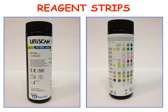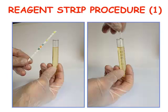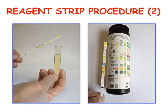What about the reagent strip? The reagent strip is based on plastic sticks which bear several pads, each pad being impregnated with chemical reagents. Each specific chemical reagent develops a chemical reaction which is meant to detect a specific urine feature. The results are obtained by matching the color developed in the pad with the color scale reported on the box. You plunge the dipstick into the urine, take it out, wait for some seconds, and then compare the color you have on the stick with the color you have on the box.